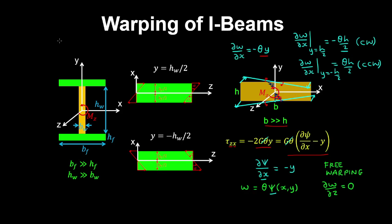Using similar ideas for an I-beam, which is really a composite section comprised of two thin flanges where the width of the flange is much larger than the height, and a web where the height is much larger than the width — under torsion, the upper part of the web would warp out of the screen and the lower part would warp into the screen. Similarly at the bottom, warping of the web occurs in the opposite sense. Therefore the top flange warps out of the screen on one side and into the screen on the other, and the bottom flange warps in the opposite direction.